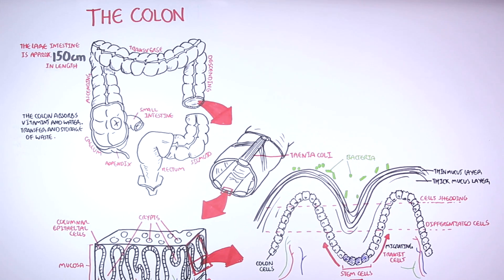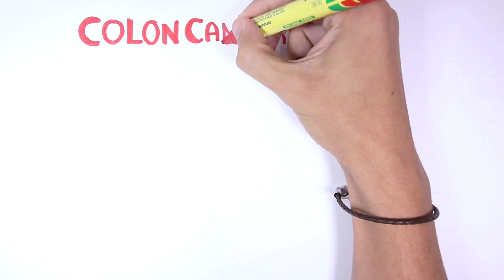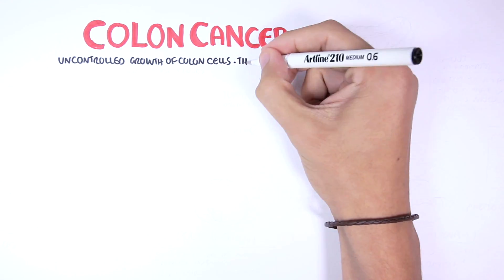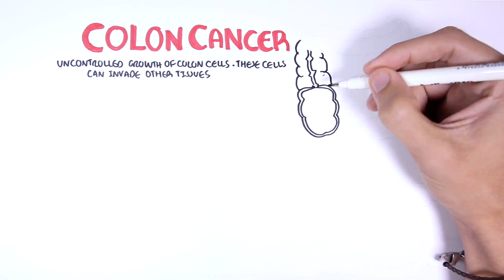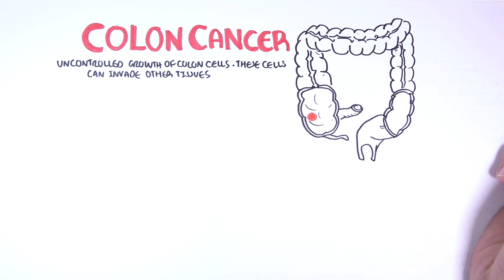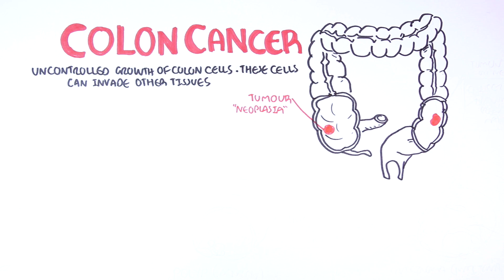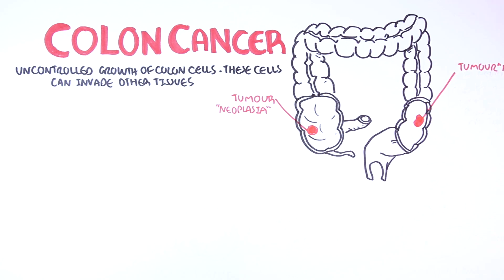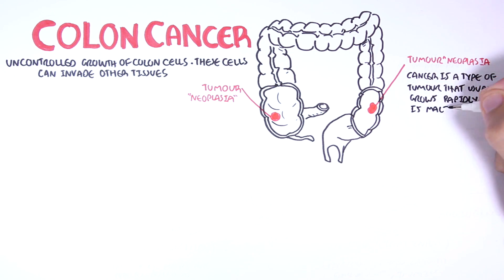Now that we have a better understanding of the colon, let us focus on colon cancer. Colon cancer is where there is uncontrolled growth of colon cells, and these cells can later invade other tissues. These red mushy looking things are tumors, which are abnormal growths. Neoplasia is another word used interchangeably with tumor — neoplasia essentially means new growth. Cancer is a type of tumor that usually grows rapidly and is malignant.